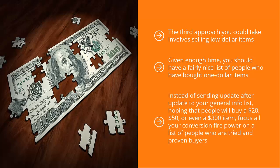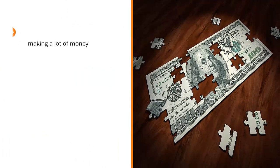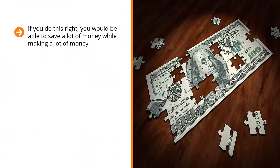Instead of sending update after update to your general info list hoping that people will buy a $20, $50, or even a $300 item, focus all your conversion firepower on a list of people who are tried and proven buyers. This saves you a lot of time and effort. You should still send updates to your general information list; however, you should space these apart and focus on value. You should also advertise only lower-dollar items. If you do this right, you would be able to save a lot of money while making a lot of money.